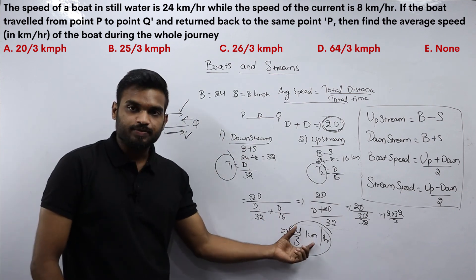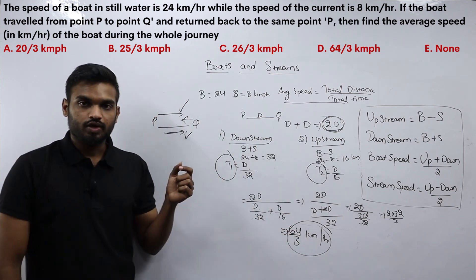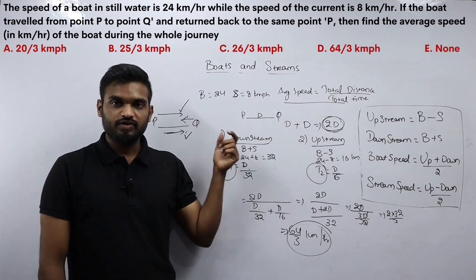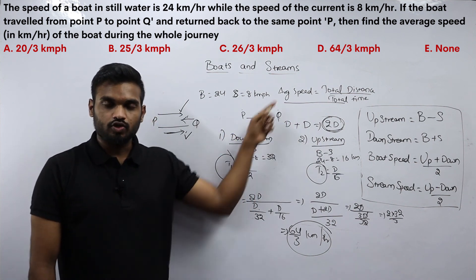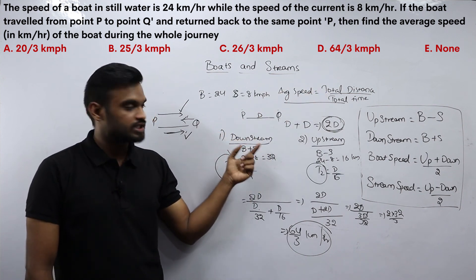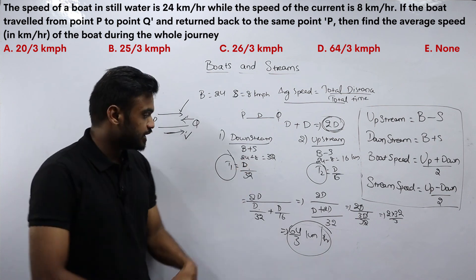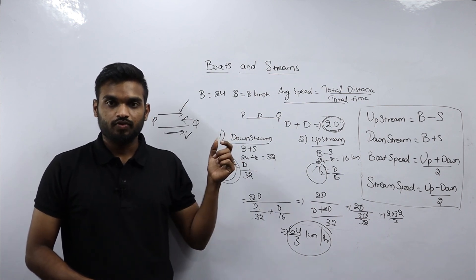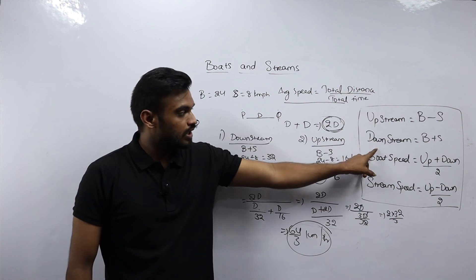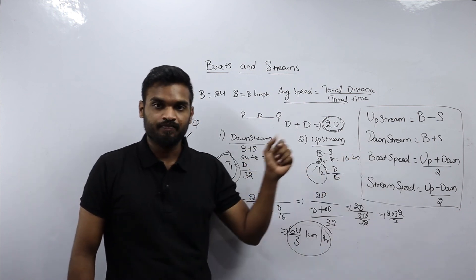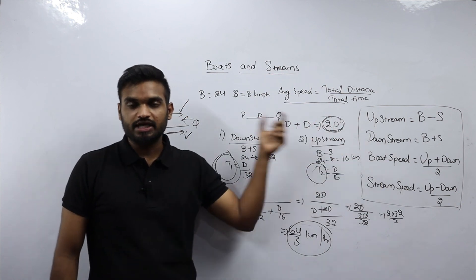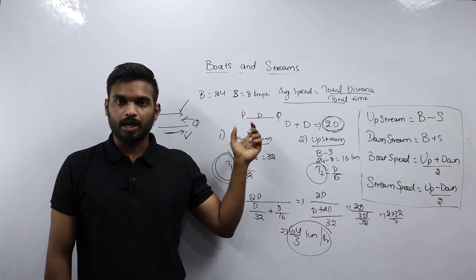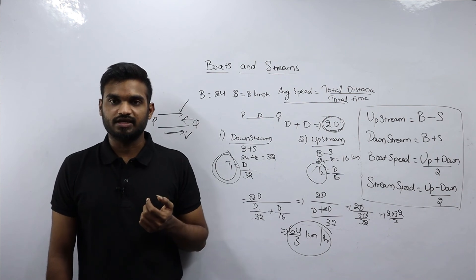So the total average speed of the boat during the whole journey is 64/3 km/h. In one direction it travels downstream and in the other upstream — no matter which way around. Average speed = total distance travelled / total time taken. Try to solve more and more problems based on boats and streams, and for more tutorials like this, please subscribe to the channel. Thank you.